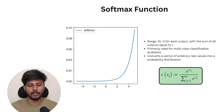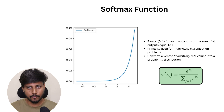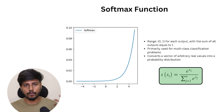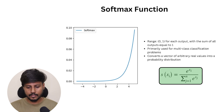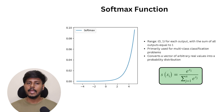Next we have the softmax activation function, which is commonly used in the output layer for multi-class classification problems. Sigmoid works for binary classification, tanh also works for that, but softmax is used when you have multiple classes, with a single neuron for each class in the output layer. At that point you use softmax instead of sigmoid or tanh, and here is its mathematical representation.